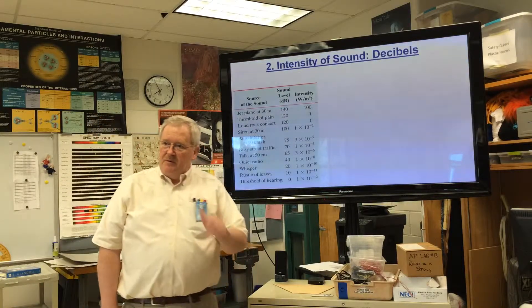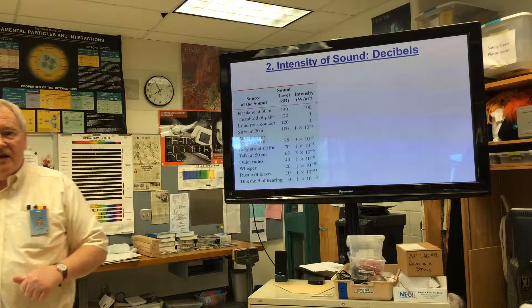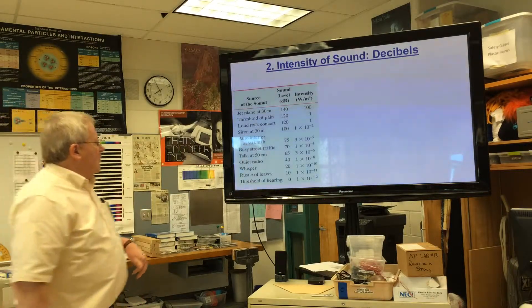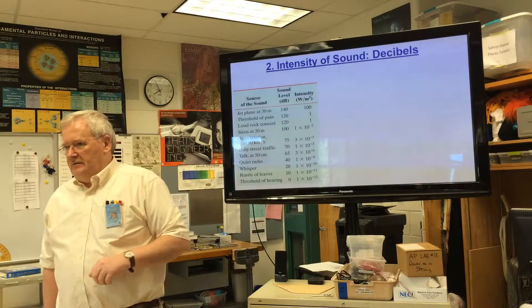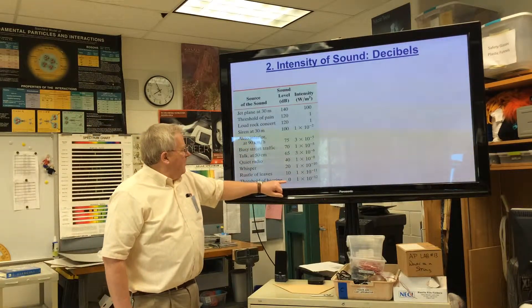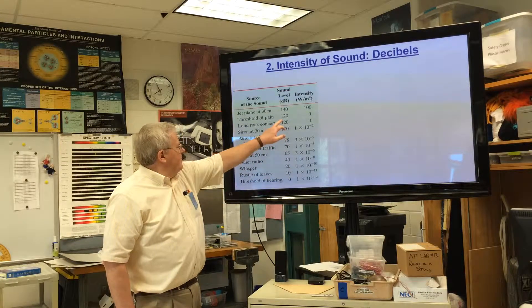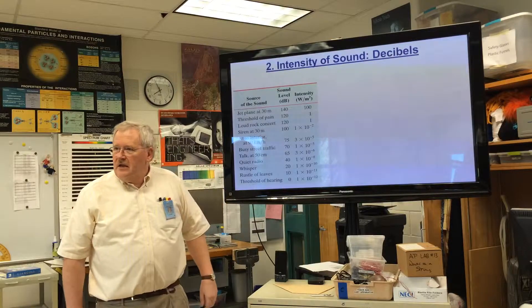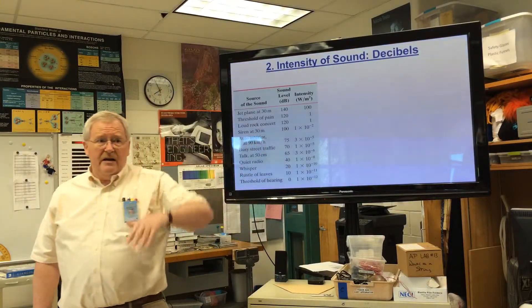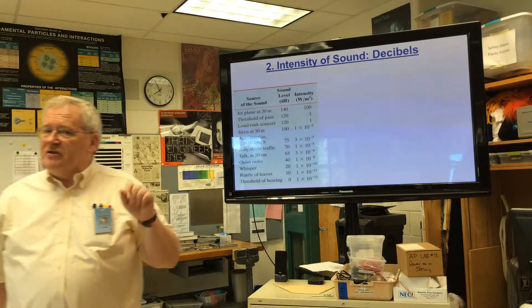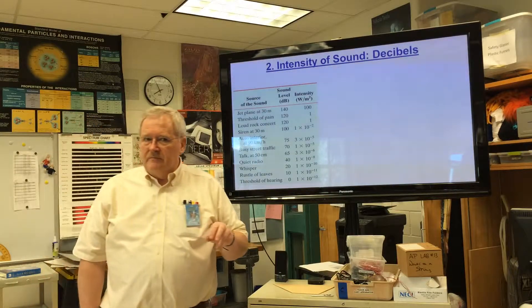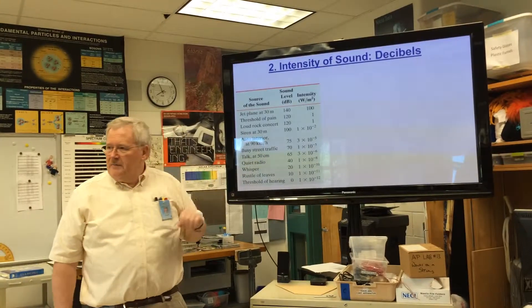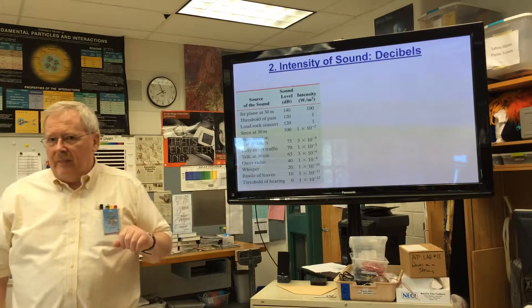10 decibels is a factor of 10. 20 decibels is a factor of 100. 30 decibels is a factor of a thousand. When you look at this, you can see the dynamic range of the human ear is amazing. It can hear over 12 orders of magnitude. That's a lot of dynamic range. The way the ear copes with that dynamic range is not to be linear but to be logarithmic in its response. The decibel is based on a logarithmic scale. Intensity is based on a linear scale in watts per square meter.